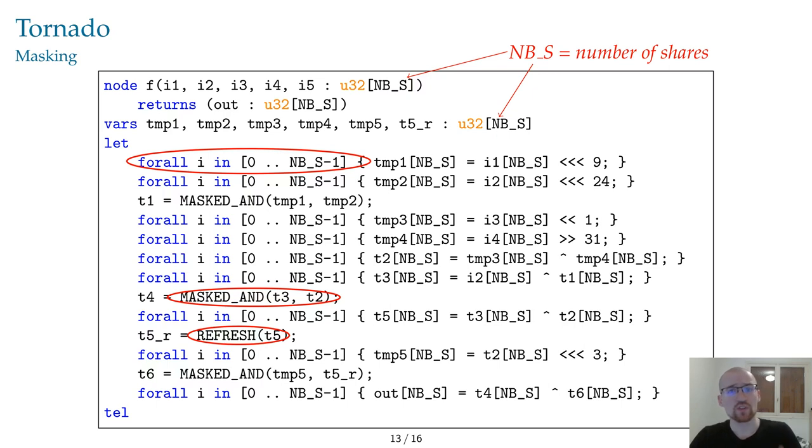The Usuba 0 code is then masked. This transformation is done by replacing each variable with an array of shares, and replacing each operator with a masked gadget. For linear operations, the masked gadget is written directly in Usuba as a loop, while for non-linear operations and refreshes, it is written as a function call.